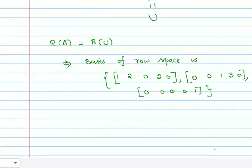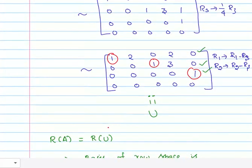Now for the column space of A: C(A) is not equal to C(U). The Gauss-Jordan elimination method does not preserve column space, but row space is preserved. So what I have to do is — I already found the pivot columns: they are column 1, column 3, and column 5. I will take these as C1, C2, C3 — corresponding to the first, third, and fifth columns.